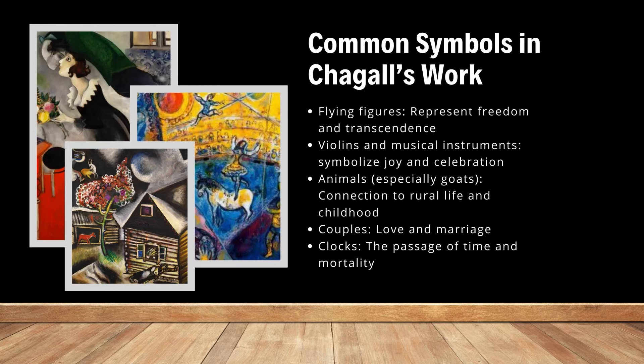We're going to briefly look at common symbols you can see in many of Chagall's pieces. He includes flying figures, which represent freedom and transcendence beyond what was going on at the time. Violins and musical instruments symbolize joy and celebration. He included animals a lot — he grew up in a farming family, so those animals have a connection to rural life and his childhood. He included goats a lot, so I imagine he had a lot of goats growing up. Couples represent love and marriage, and he includes clocks, which represented the passage of time and mortality. These are just a few of the symbols he uses consistently throughout his pieces.